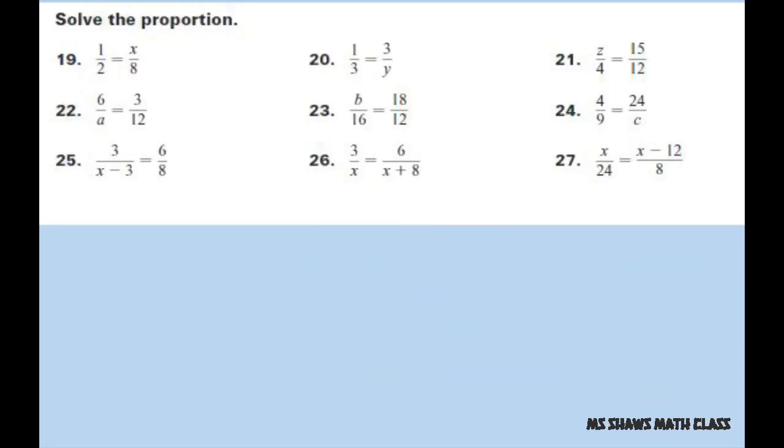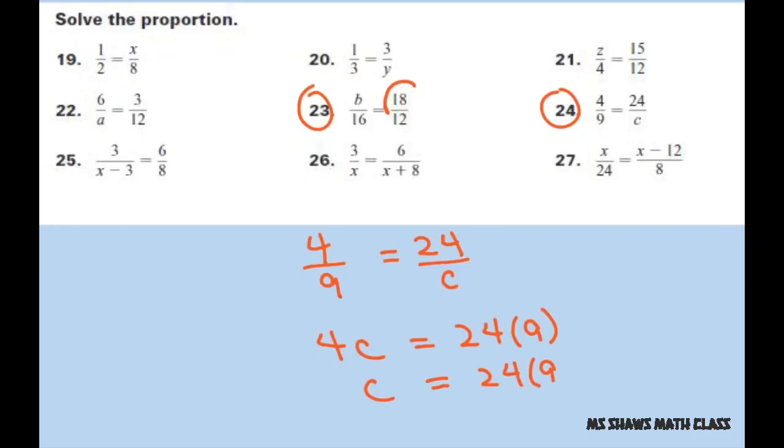Alright, let's do the next one. Let's go ahead and reduce this. Oh we already did that one, right? Okay, so let's do this one. We have 4 divided by 9 equals 24 divided by C. Cross multiply, you get 4C equals 24 times 9. Divide it by 4. 4 goes into 24 six times, so you get 6 times 9 equals 54.